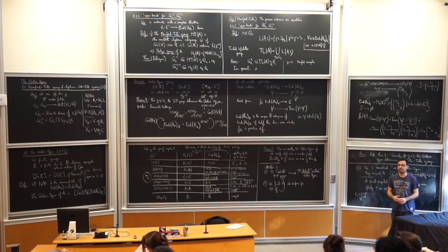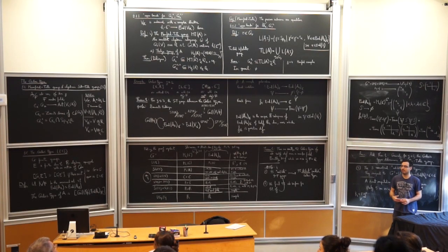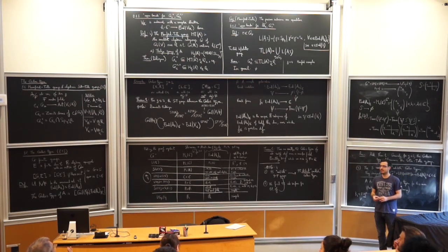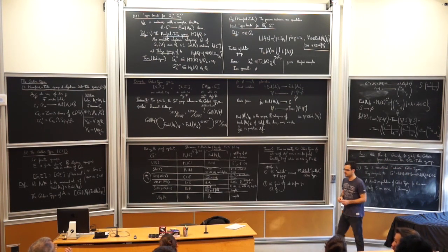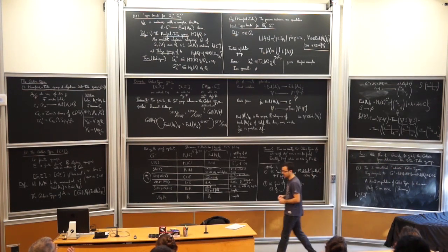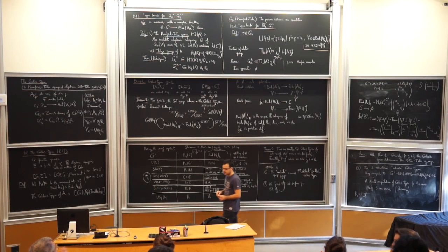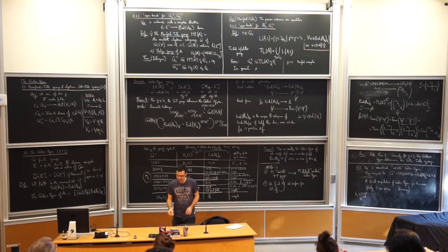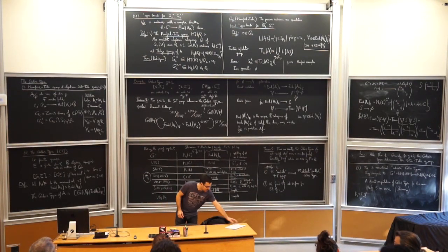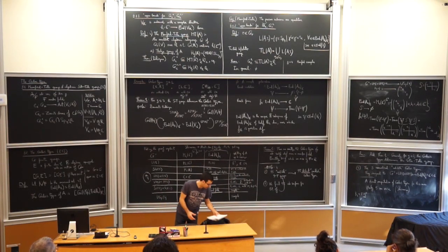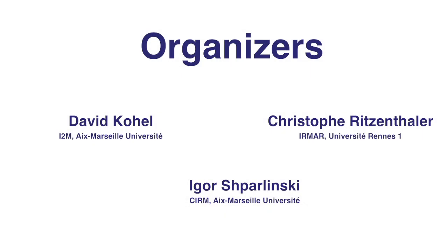For the product of two elliptic curves with CM, the field K can never be a degree-8 extension — it will be at most 2 times 2. Thank you.